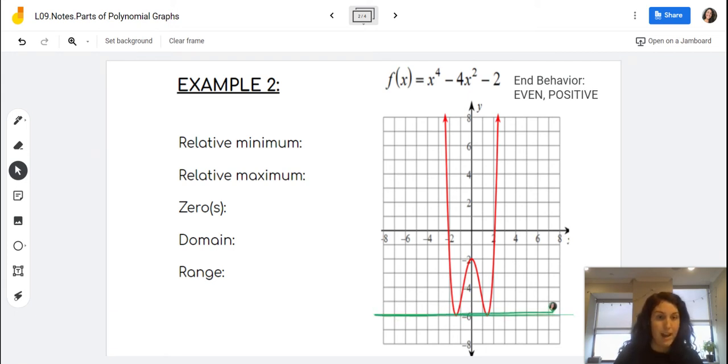They're both hitting at y equals negative 6. So I'm just going to be writing that my minimum is at y equals negative 6. Both of those would be my relative minimum because I'm hitting at that lowest number.